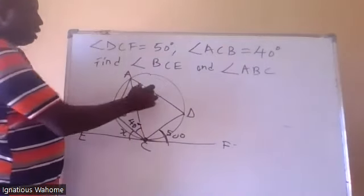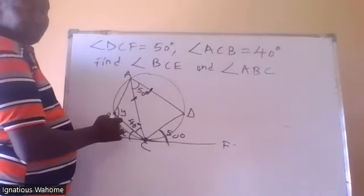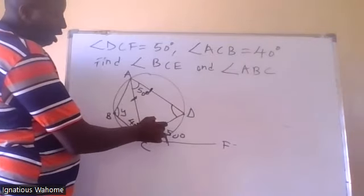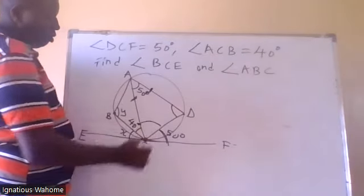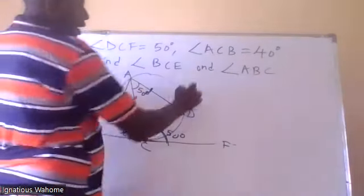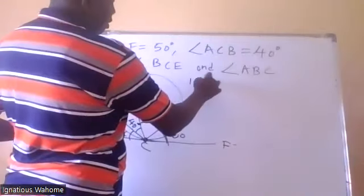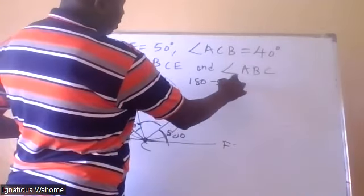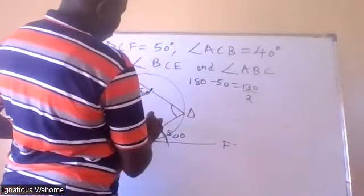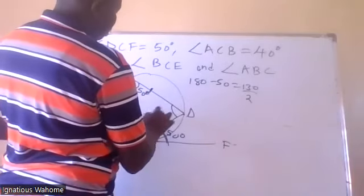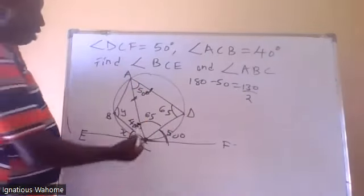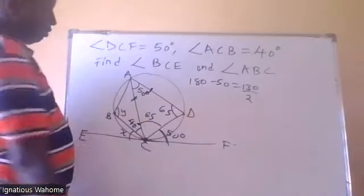And then we are told that this one is equal to this, meaning the size of this angle, this angle, and this angle are equal. So therefore 180 minus 50, over 2 — you get 65. So this angle is 65 and this angle is 65.